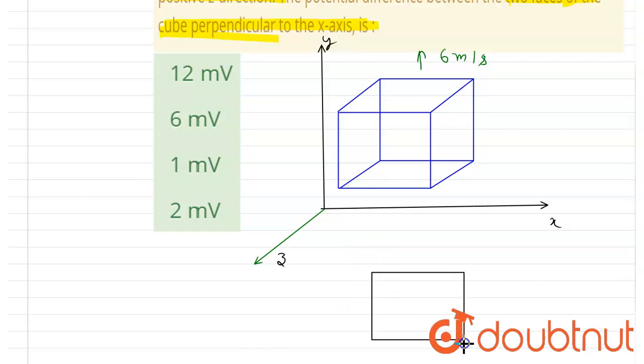Let's suppose this is a cube and this cube is moving like this, and magnetic field B is in this direction.